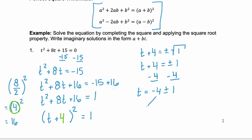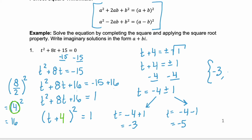Remember that this gives us two solutions: negative 4 plus 1 and negative 4 minus 1. Negative 4 plus 1 tells us that t equals negative 3, and negative 4 minus 1 gives us t equals negative 5. So our solutions here are negative 3 and negative 5.